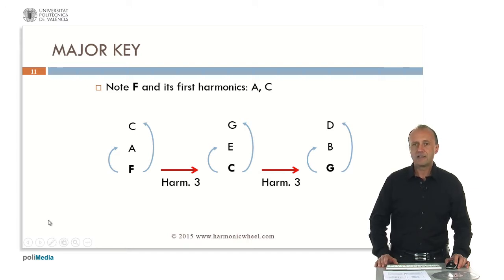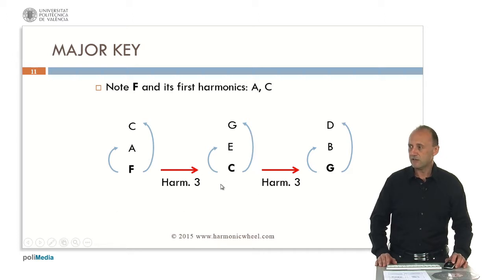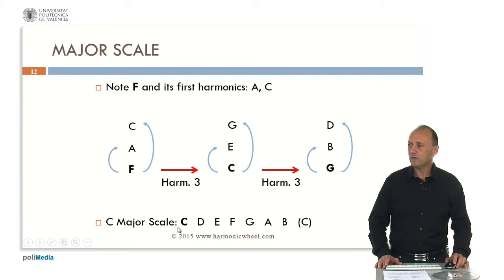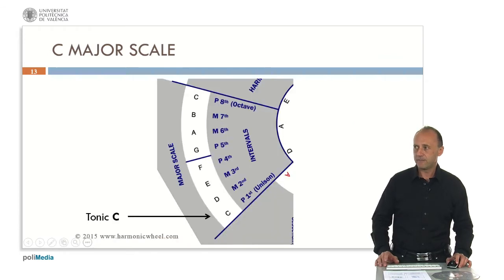These seven notes form the C major key — C because we started with note C. If we sort out these notes by pitch, we obtain the corresponding major scale, which notes are C, D, E, F, G, A, B, and again C.